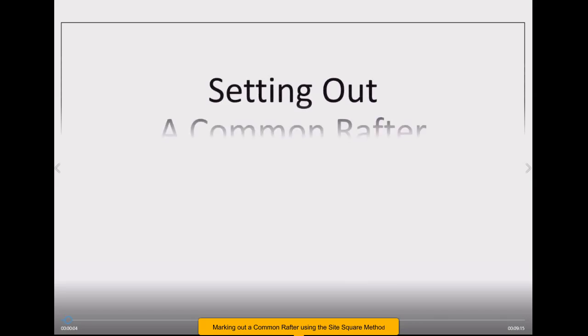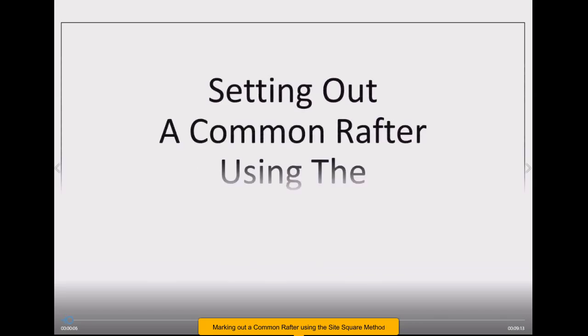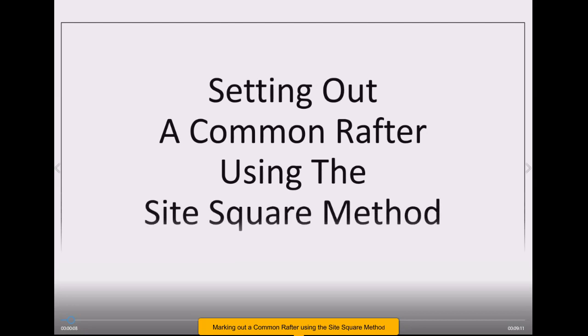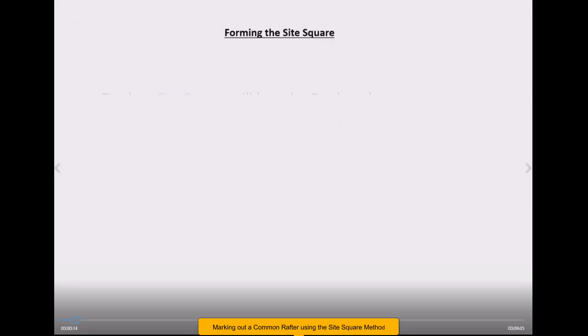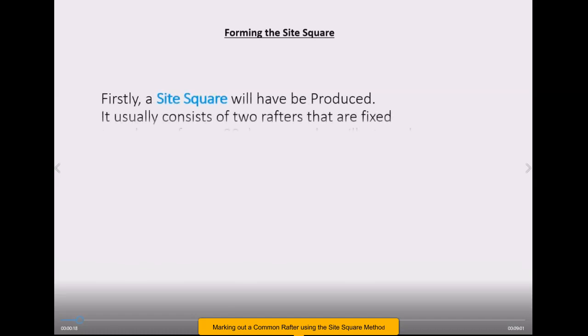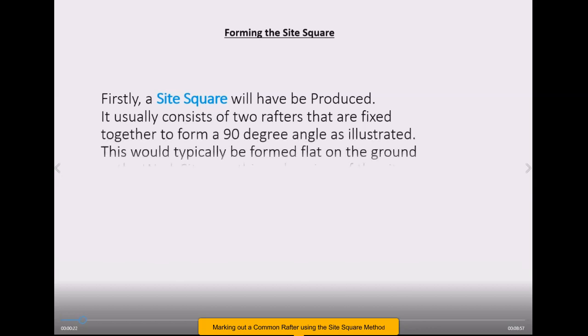Okay everyone, this is an illustration on how to set out a common rafter or guide rafter using a site square method which is set up on site here. This illustration basically shows you have two rafters held together to form an L on the ground, so this would be your bird's eye view or plan view of it.